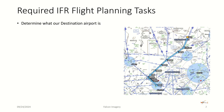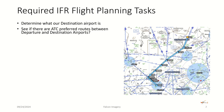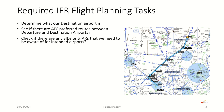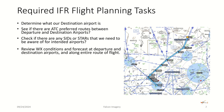Number one, we need to determine what airport we're going to — our destination airport. Then we want to see if there are any ATC preferred routes between the departure and destination airports. We need to know whether we have slant uniform or VOR/ILS capabilities, or GPS capability in the aircraft. We're also going to want to check if there are any SIDS or STARS for the intended airports, and review weather conditions and forecast information both at the departure and destination airports and along the entire route of flight.